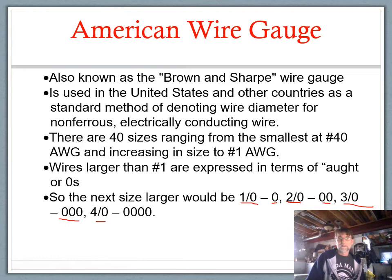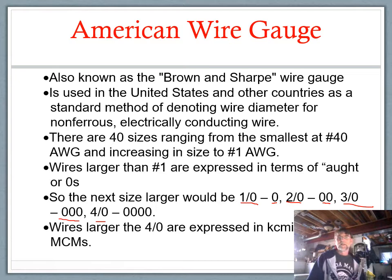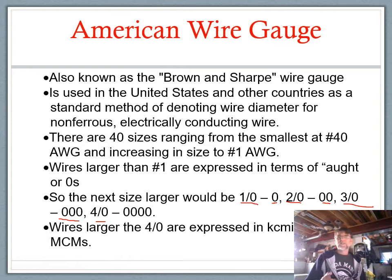Four ought is the size used for a 200-amp service, for example. These aren't standard AWG sizes per se — they're kind of in a category by themselves: one ought, two ought, three ought, and four ought. Once you get to conductors bigger than four ought, we use circular mil area. Beyond four ought, the next size up is 250 kcmil. So beyond four ought, we talk in terms of kcmil or MCM.